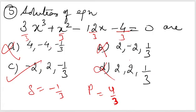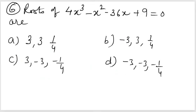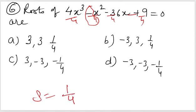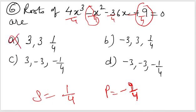Sixth example: divide everything by 4. The sum equals opposite sign of the resulting x² coefficient, giving 9 by 4. The product equals opposite sign of the constant, giving minus 9 by 4. Remember: for sum and product we always take the opposite sign from the second term and the constant term respectively. Checking options: only the option giving sum = 9/4 and product = minus 9/4 is correct. I hope you have gotten a clear idea from these examples — thank you.